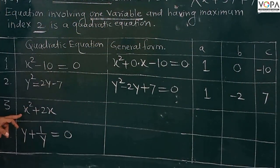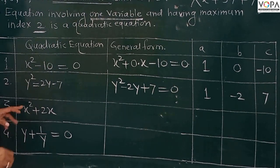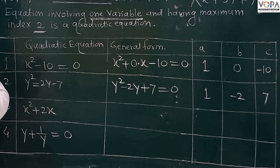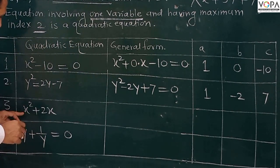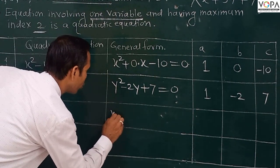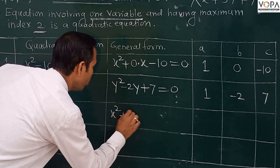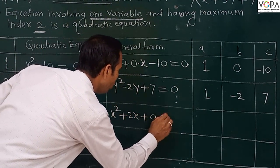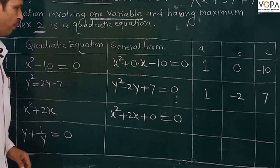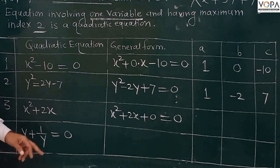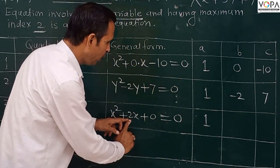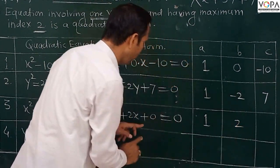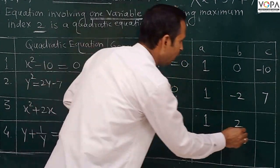The next equation: the constant term is absent here. So we write x² + 2x + 0 = 0. The value of a is 1, value of b is 2, and value of c is 0.